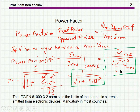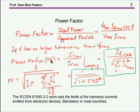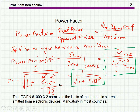On the other hand, if there's no distortion, then the sum will be only the first component, and therefore the ratio will be one. So a power factor of one means there's no distortion of the current, while THD will be zero. As distortion develops, power factor will be smaller and smaller, and THD will be higher and higher, according to these relationships.